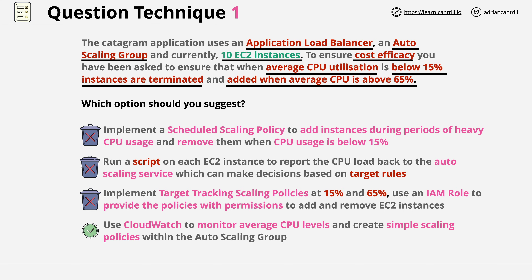Just because something is omitted doesn't mean it's not done. The answer states creating simple scaling policies, and in the real world you'd create one of these policies for when CPU utilization is below 15% and another for above 65%. But just because the answer doesn't explicitly mention them doesn't prevent it from still being valid. You need to understand how to read between the lines and identify if anything in a question excludes it as a correct answer, or if the information is simply omitted. Because all three other answers are incorrect due to clear errors, we know the fourth answer is correct, and so I would pick this answer for the exam.